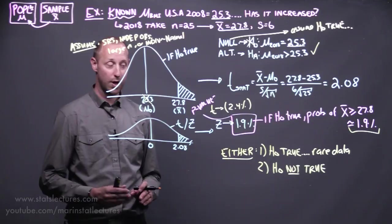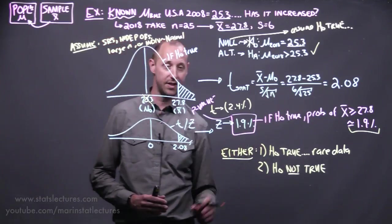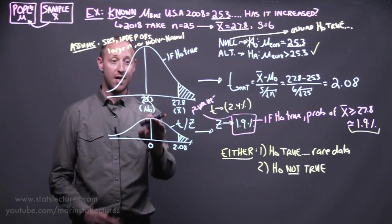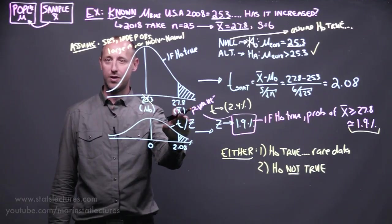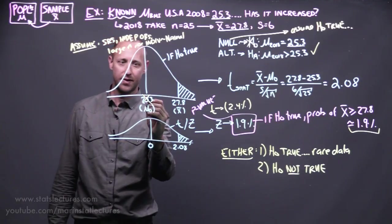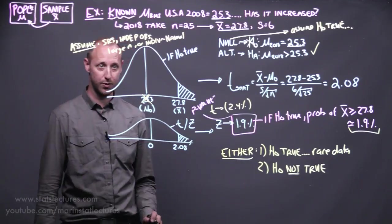So when our p-value is small, like it is here, what that tells us is if our null is true, what we saw in our sample wouldn't be very likely to show up. Therefore, we think it's probably not true.